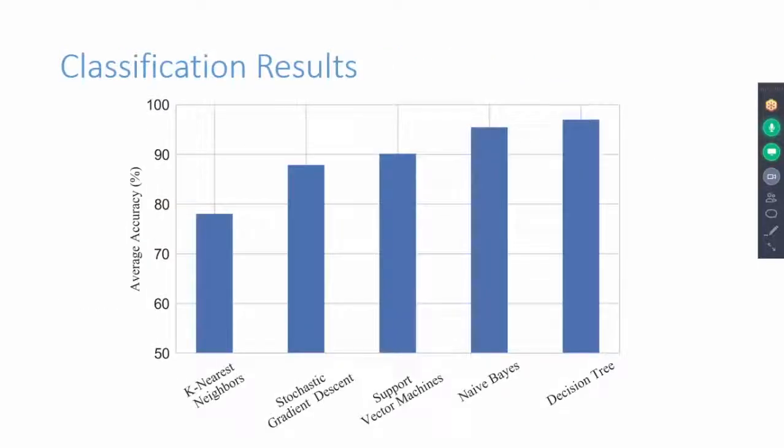These are overall classification results of five machine learning algorithms. Namely, k-nearest neighbor, stochastic gradient descent, support vector machines, naive Bayes, and decision tree. We find that decision tree outperforms all other algorithms.